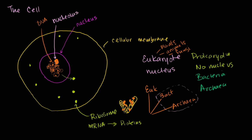But it turns out the nucleolus is a densely packed region of DNA and RNA—it's actually where ribosomal RNA, the stuff that makes up the ribosomes, is produced. It's so dense that it shows up on a microscope, which is why people decided to name it something different. But it is not membrane-bound; it's not an organelle within an organelle—just densely packed proteins and ribosomal RNA.